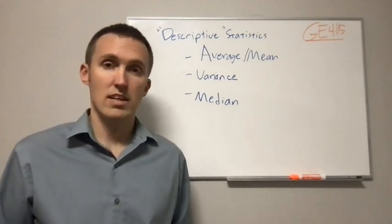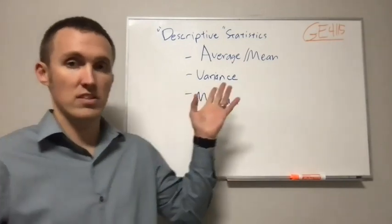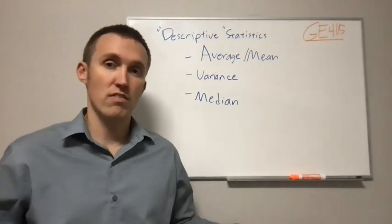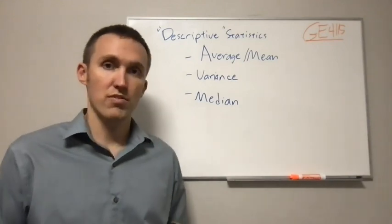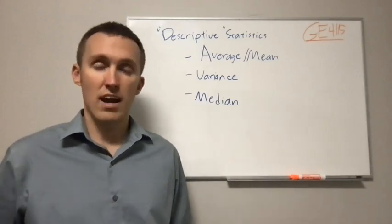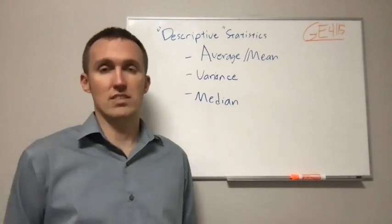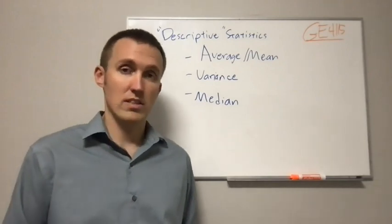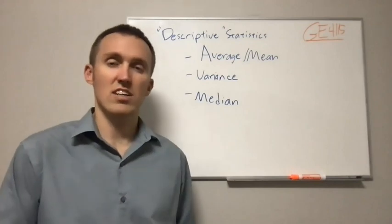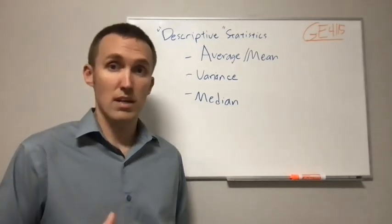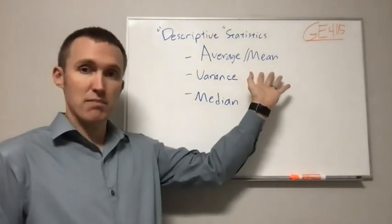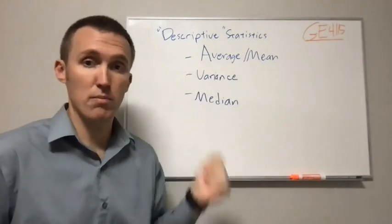We've talked about several different statistics that you can calculate for a set of numbers, and some of these are the average or mean. The mean is the average of the whole population of objects — for example, the height and weight of every student at Missouri S&T. Whereas if you just took a sample of students, that would be a sample average. So the mean refers to the whole population, and the average is just whatever sample you have.